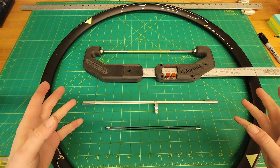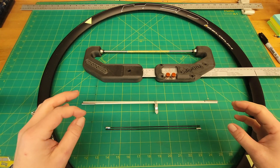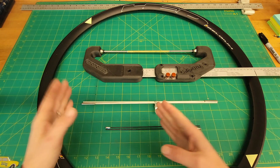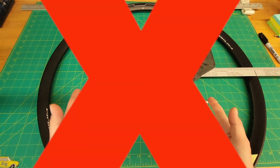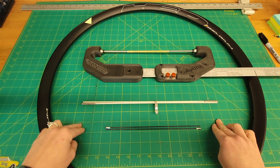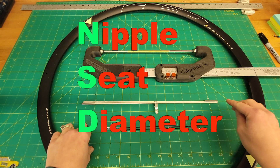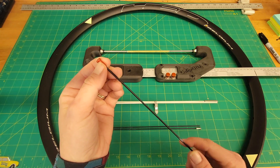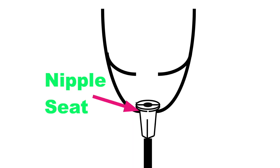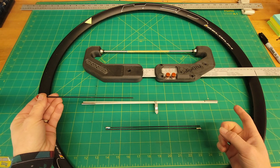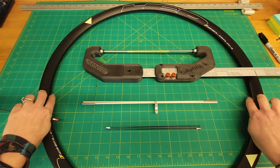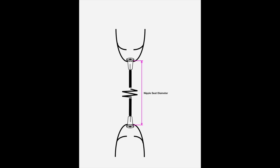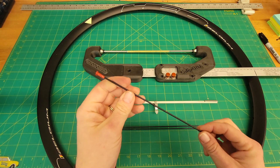When we talk about measuring ERD, it's a pretty big assumption that when you measure, you are actually measuring the ERD. You're not, most of the time. Most of the time you're actually measuring the NSD — the nipple seat diameter. If you look at a spoke with a nipple on it, the nipple seat is where the spoke nipple lip sits on the inside of the rim.